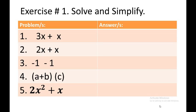Number 2: 2x plus x. Number 3: negative 1 minus 1. Number 4: the sum of a and b times c, or a plus b times c. Number 5: 2x squared plus x.